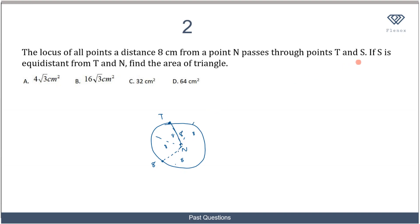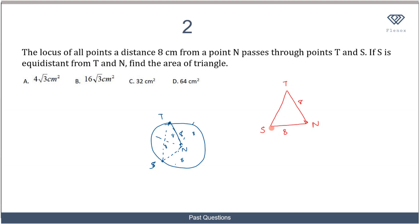We're also told that S is equidistant from T and N. This means the distance from S to T equals the distance from S to N. Since N is the center and S lies on the circle, the distance SN is 8 centimeters. Therefore, ST is also 8 centimeters.